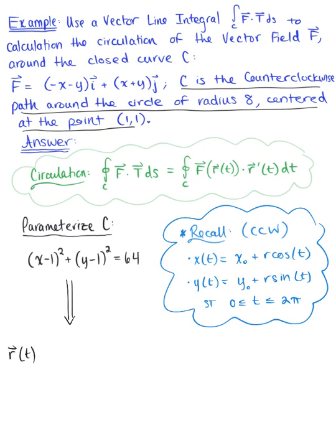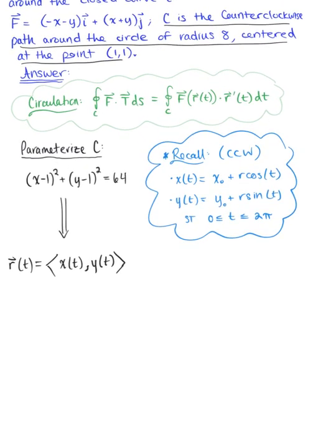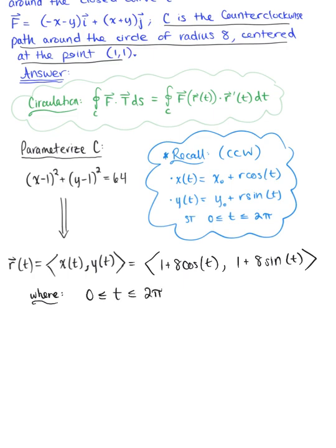Using this, our one-parameter description vector r(t) has components x(t) = 1 + 8cos(t) and y(t) = 1 + 8sin(t). Since this is a counterclockwise closed curve, t ranges from 0 to 2π.